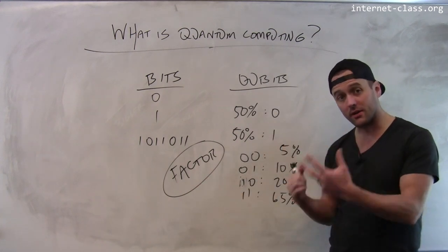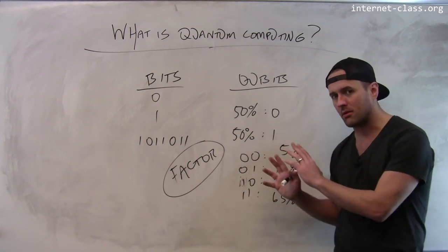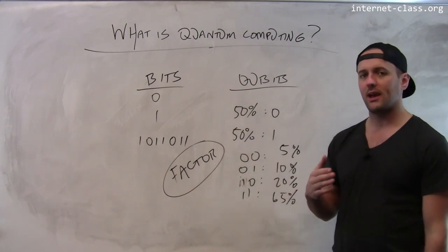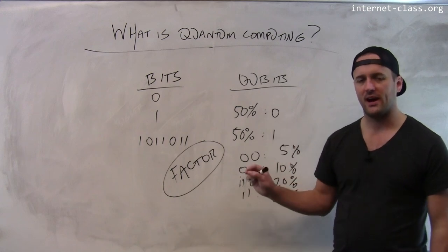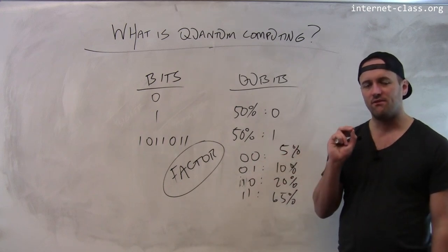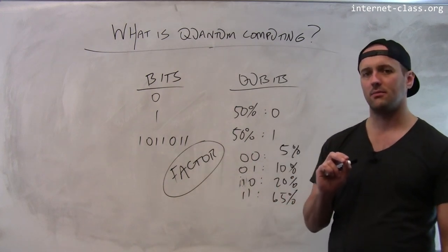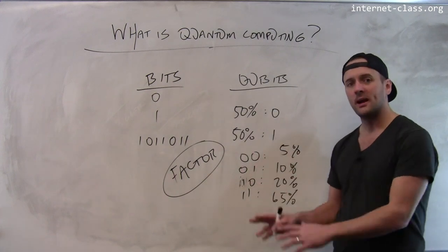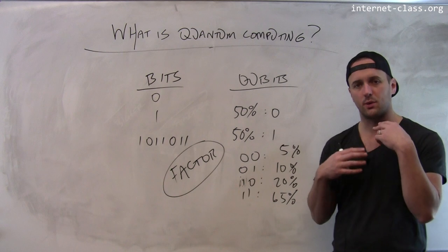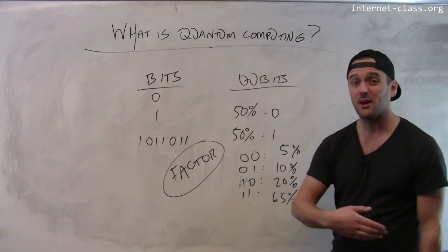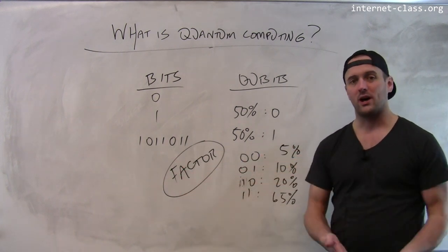Quantum computers also have other uses in solving other kinds of problems, but a lot of the interest and excitement around them has to do with the simple fact that they can factor very efficiently and that would make them very disruptive to today's computing environment. Maybe in the future, alongside our traditional computers, we have these very specialized quantum computers that we use to solve certain problems. Maybe hundreds of years from now, we even have quantum smartphones.